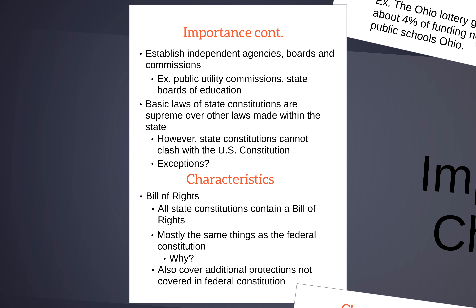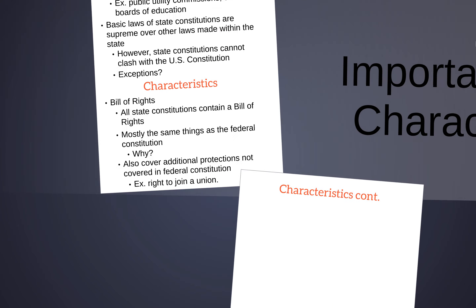State constitutions also cover additional protections not covered in the federal constitution, including things outside the scope of the federal government. For example, what is the drinking age in Ohio? We know it's 21, and that is not a federal law — the federal government can't make that law, so whatever Ohio says is what's true. Another example is the right to join a union. In Ohio, everybody has the right to join a union. Ohio is not currently a right-to-work state, which means you could be required to join a union for certain employers, but you always have the right to join one if you choose.